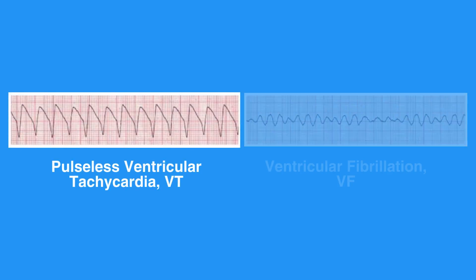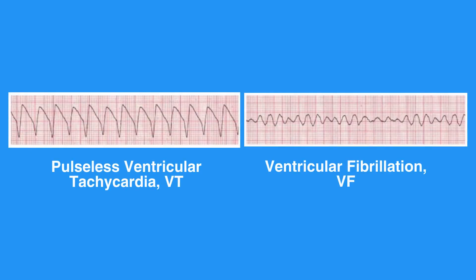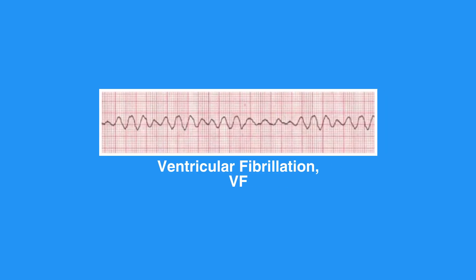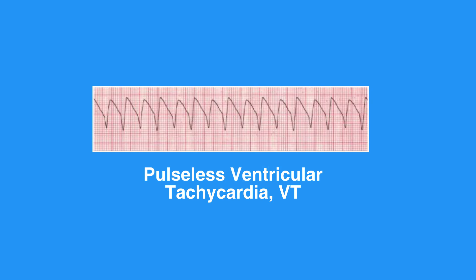Pulseless ventricular tachycardia, VT, and ventricular fibrillation, VF, are life-threatening cardiac rhythms that result in ineffective ventricular contractions. The ventricular motion of VF is not synchronized with atrial contractions. VT is a condition in which the ventricles contract more than 100 times per minute. VF, or V-fib, is a rapid quivering of the ventricular walls that prevents them from pumping.